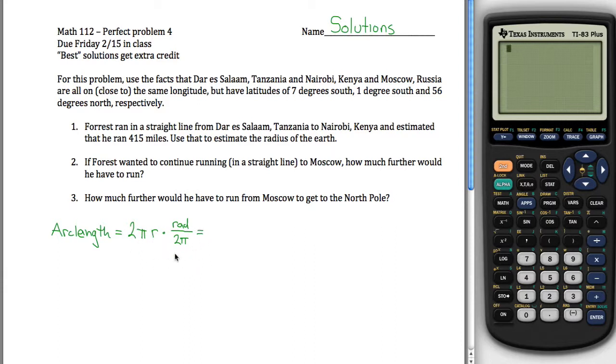But what's kind of nice here is the 2 pi's cancel out. This 2 pi and this 2 pi cancel out. What we get is arc length is given by just the radius of the circle times however many radians we have. So that'll be really helpful, having that as a little bit of a formula to use throughout this problem.